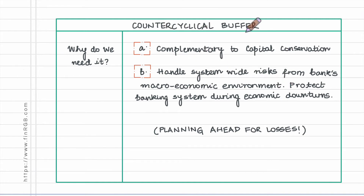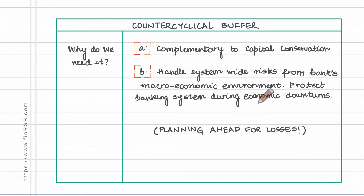The counter cyclical buffer is meant to handle system-wide risks from the banks' macroeconomic environment. It is introduced to protect the entire banking system during economic downturns and to lessen the impact that cyclical economic activity might have on the banking system as a whole.